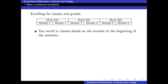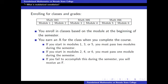And if you start in modules five or six, you enroll in math 96. You will earn an A for the class that you are enrolled in when you complete the course. Completion of the course means passing the second module of each pair.